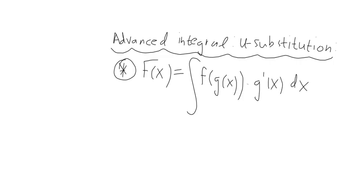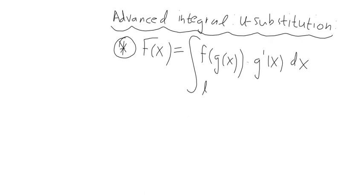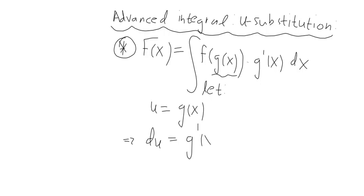This is the U substitution method for integration. If we have an integral of some composite function, it is multiplied by its differential G prime of X dx. Here you would say: let U equal to G of X — so this part here is my U — then my DU will be equivalent to G prime of X dx.